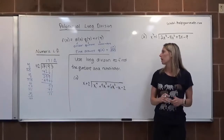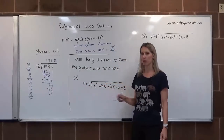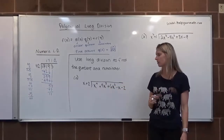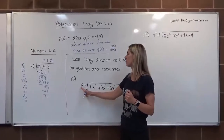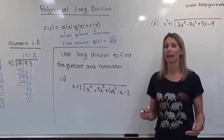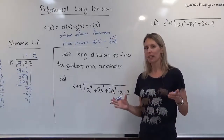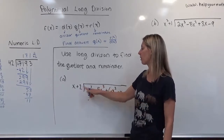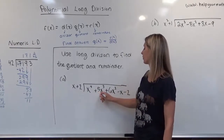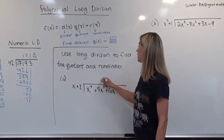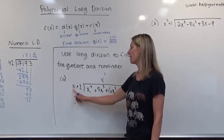We're going to use the same technique with polynomials. Our divisor is x+2 and we are dividing it into x⁴+5x³+6x²-x-2. We focus on the term with the highest degree: how many times does x go into x⁴? It goes in x³ times. Because the divisor has two terms in sequential degree order, I'm going to bump the result over so that x³ lines up properly.